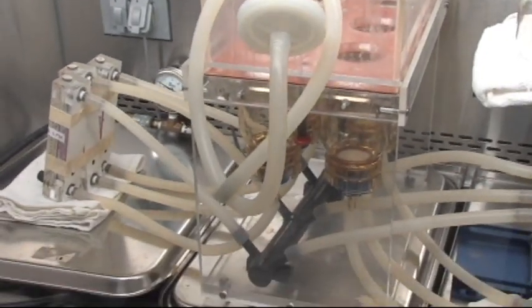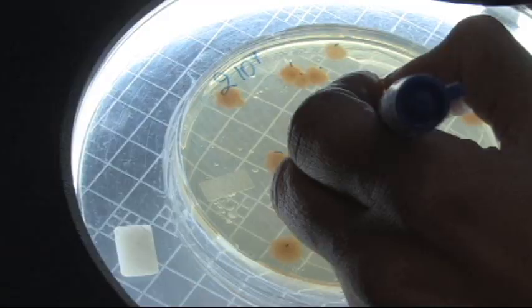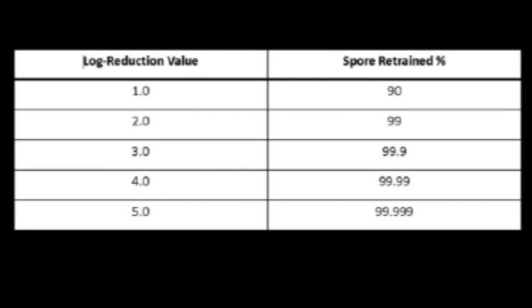Any organisms that pass through are collected and enumerated to calculate a log reduction value. Higher log reduction values indicate better barrier performance.